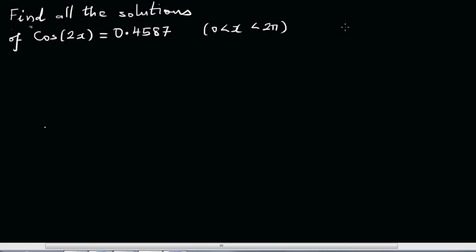Let's first write the general solution. It's good to write this example in the general solution form. If cos(θ) equals cos(α), then θ equals 2nπ plus or minus α. This is the general solution.